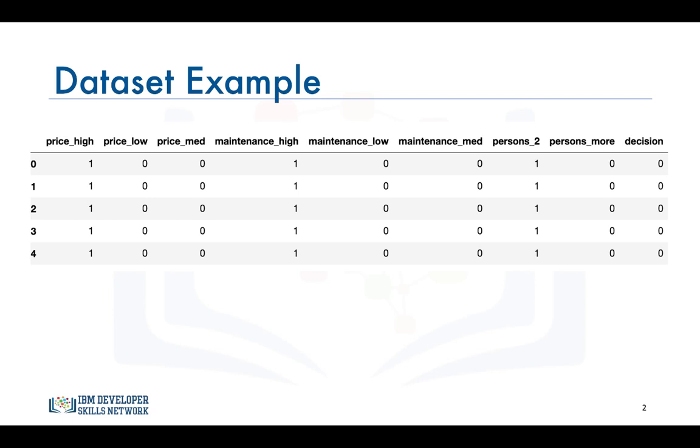So here's a data set that we're calling car_data. I already cleaned the data as you can see where I used one hot encoding to transform each category of price, maintenance, and how many people the car can accommodate into separate columns.